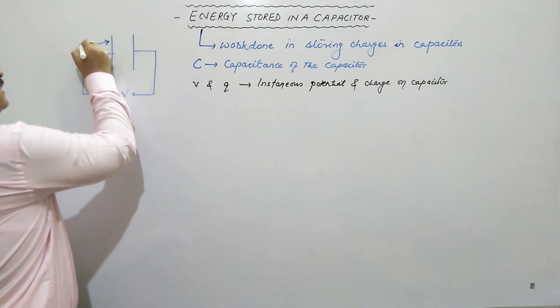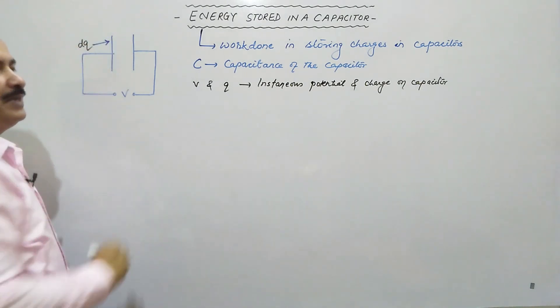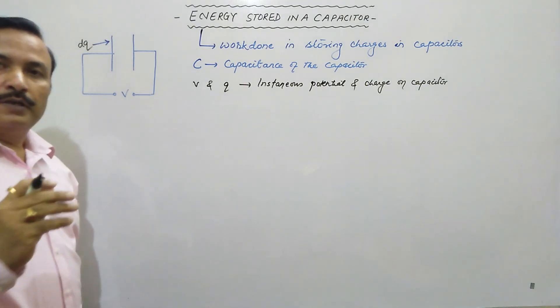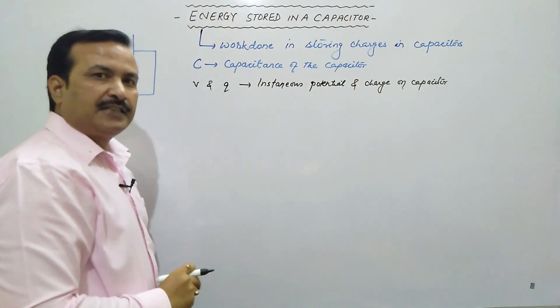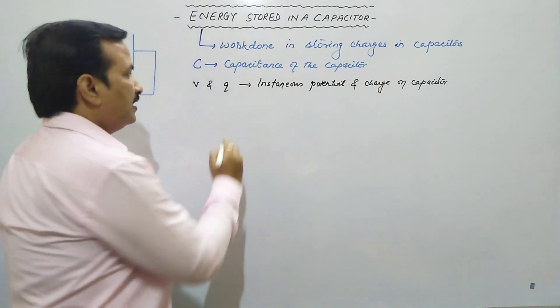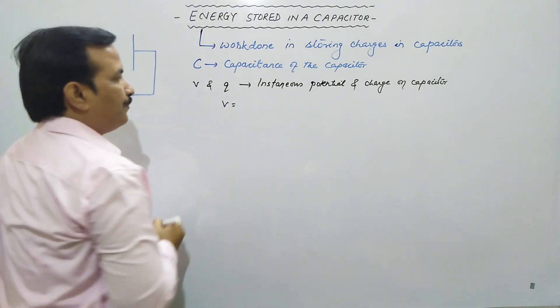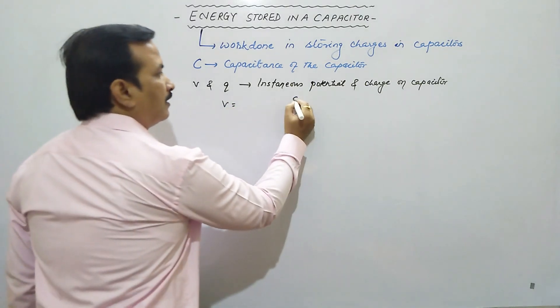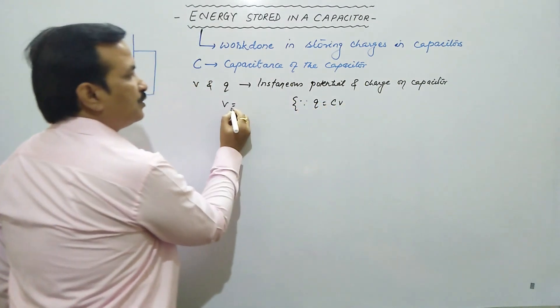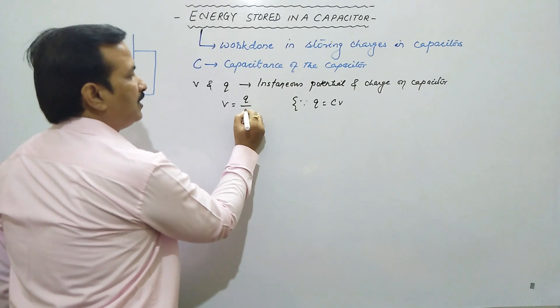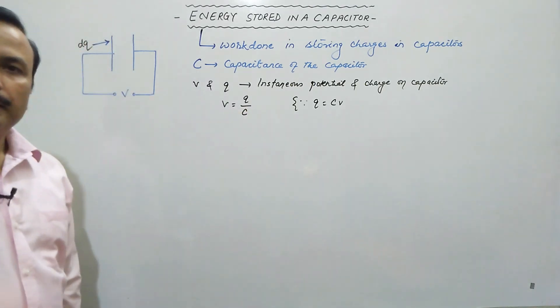Now suppose we want to add DQ charge. If your V potential is there and Q charge is there, we have relation Q is equal to CV, so V is equal to Q upon C.